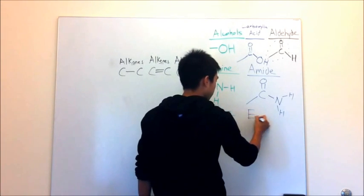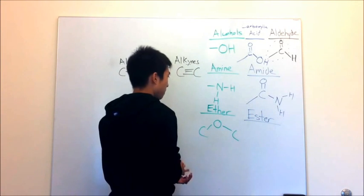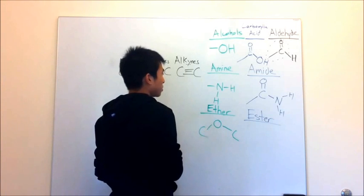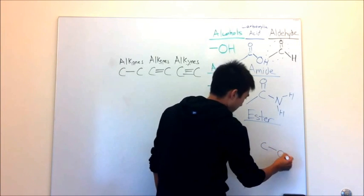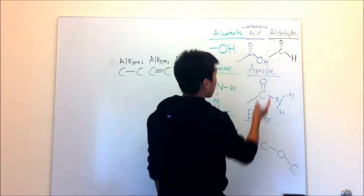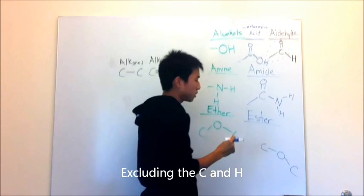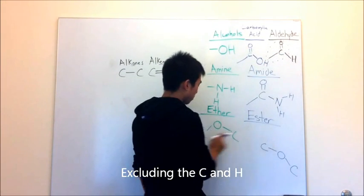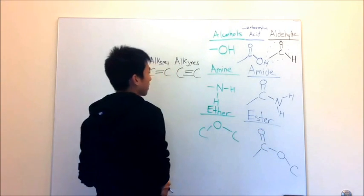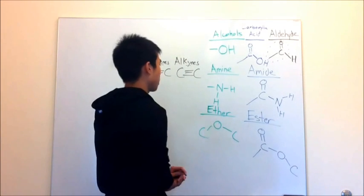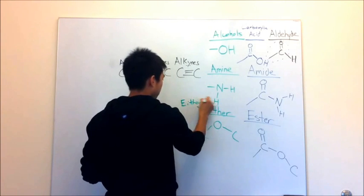Now the ester is just a little bit more complicated than ether. I do what I did before and bring in the ether, then bring in the aldehyde component again, excluding the H. One small difference is that instead of bringing in a new carbon, I use the carbon from the ether. There you go — that's your ester. It's more complicated than the ether, and you can use the trick: ether, like 'either.'